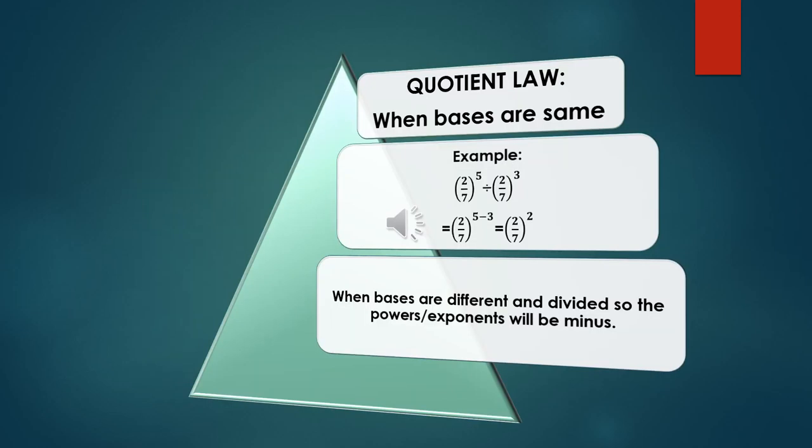Quotient law means when the bases are divided by each other. In this example bases are same. Bases are 2 upon 7 and the powers are different.